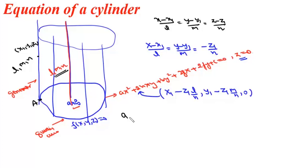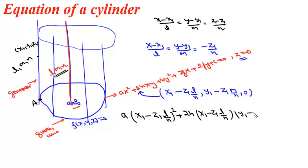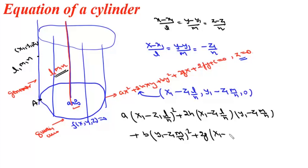Since point A lies on the guiding curve, we can substitute its coordinates into the curve equation to get: A(X1 − Z1·L/N)² + 2H(X1 − Z1·L/N)(Y1 − Z1·M/N) + B(Y1 − Z1·M/N)² + 2G(X1 − Z1·L/N) + 2F(Y1 − Z1·M/N) + C = 0.